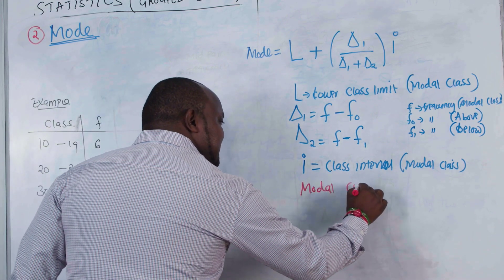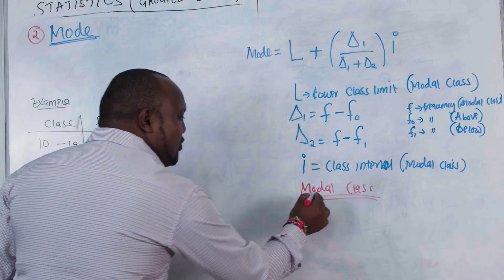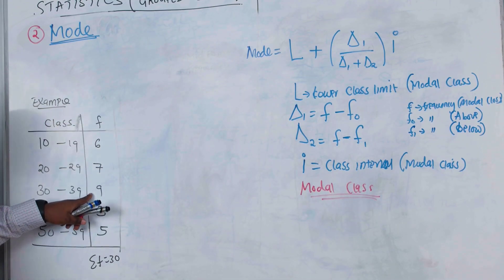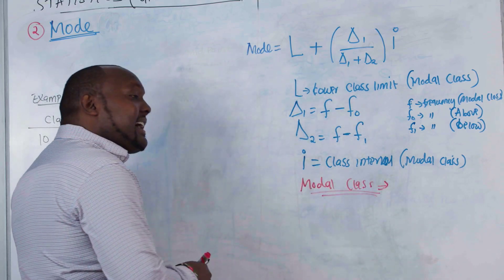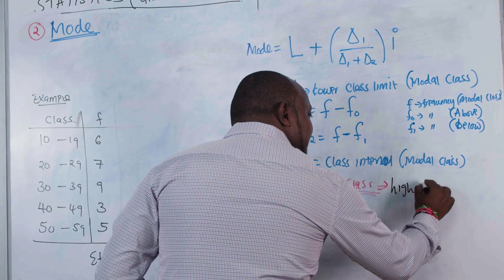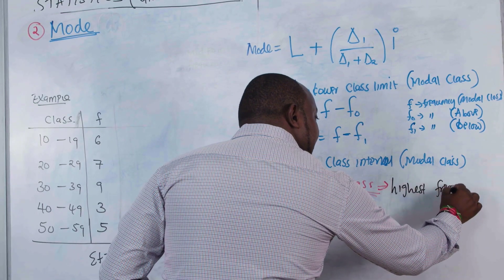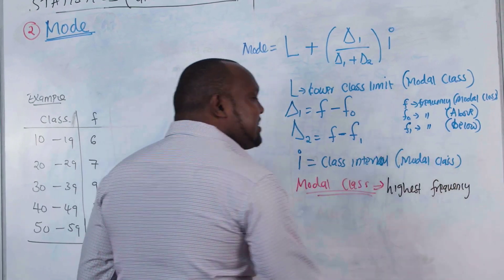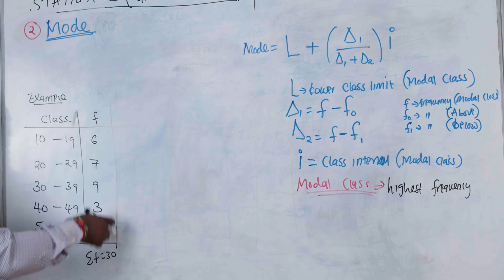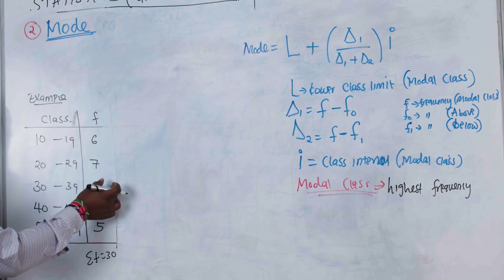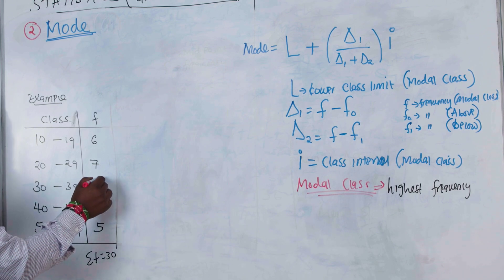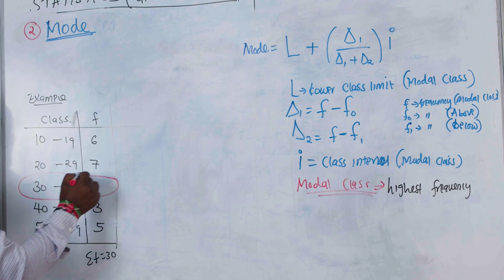The modal class is the class that has the highest frequency. Looking at our frequencies — 6, 7, 9, 13, and 5 — the highest frequency is 13. Wait, actually in this example the class with the highest frequency relevant here is 9, which is the class 30 to 39.